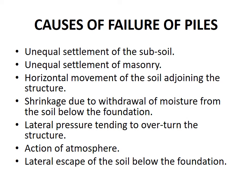Causes of failure of piles — the main causes are: unequal settlement of the subsoil, unequal settlement of the masonry, horizontal movement of the soil adjoining the structure, shrinkage due to withdrawal of moisture from the soil below the foundation, lateral pressure tending to overturn the structure, action of the atmosphere, and lateral escape of soil below the foundation.